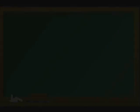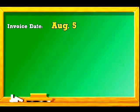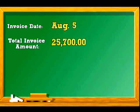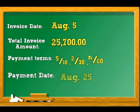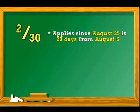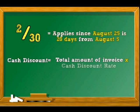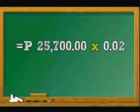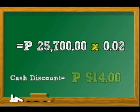Let's find the amount of cash discounts and amount of payment due for the following invoices. The invoice date is August 5. Total invoice amount is P25,700. The payment terms are 5/10, 2/30, and net 60. The payment date is on August 25, so the 2/30 payment term applies since August 25 is 20 days from August 5. Hence, cash discount is equal to total amount of invoice multiplied by cash discount rate: P25,700 multiplied by 0.02, giving us P514.